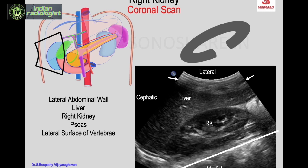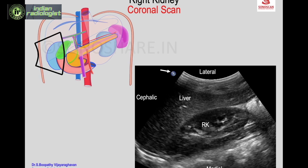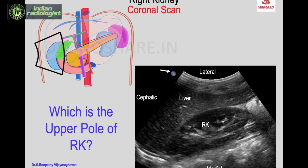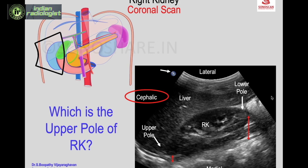You also see the psoas muscle medial to the right kidney and the lateral surface of the vertebra seen as a white line with shadow. Since the probe mark is cephalic, the upper pole is towards the head. Above the upper pole is the adrenal area; the lower pole is more laterally placed than the upper pole, which is normal — because the psoas becomes bulky lower down, it displaces the lower pole more laterally. The psoas is marked by the triangle.